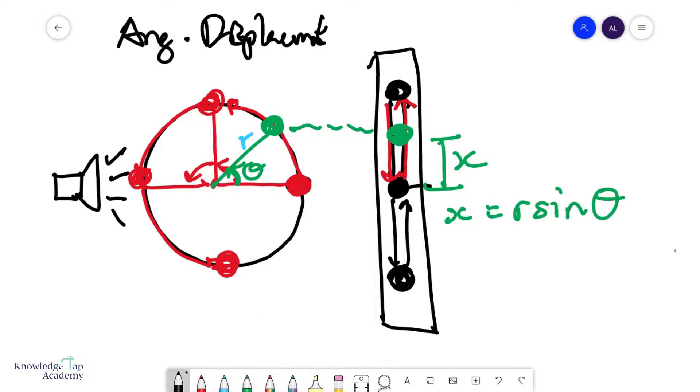And so if you think about it, when the shadow is up here, that is actually the maximum displacement from equilibrium, which we like to call the amplitude x₀. And this would mean that your ball is here. And so x₀ is equal to r, and so x is equal to the amplitude x₀ sin θ.